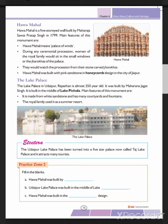Next is Hawa Mahal. Hawa Mahal is a five-story structure built by Maharaja Sawai Pratap Singh in 1799. 'Hawa Mahal' means Palace of Winds. During any ceremony or procession, the women of the royal family would sit in the small windows called jorokhas of the palace to watch the procession from their stone-carved jorokhas.